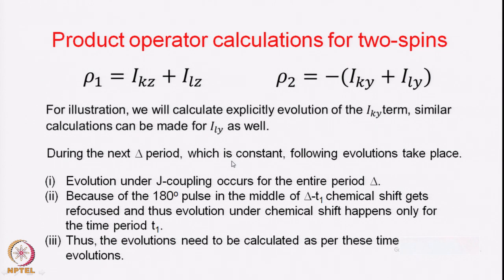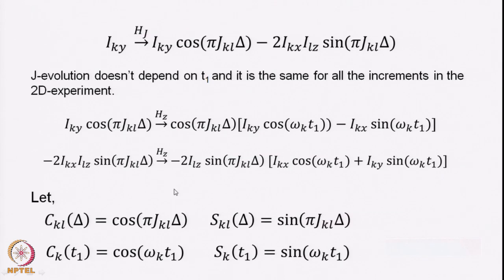During the next delta period, which is constant, the following evolutions take place. Evolution under J coupling occurs for the entire period delta — the spin echo does not influence that because it continues to evolve, except it will have implications for the line widths. The 180-degree pulse in the middle of the delta minus T1 period refocuses the chemical shift, so evolution under chemical shift happens only for the time period T1. The evolutions need to be calculated as per these time evolutions, and it does not matter which one you consider first.